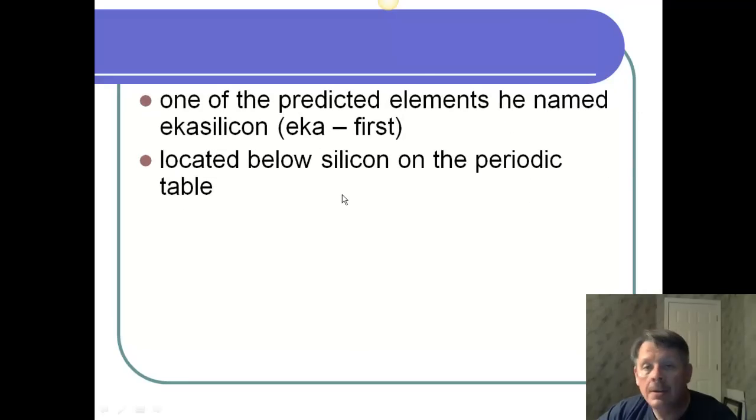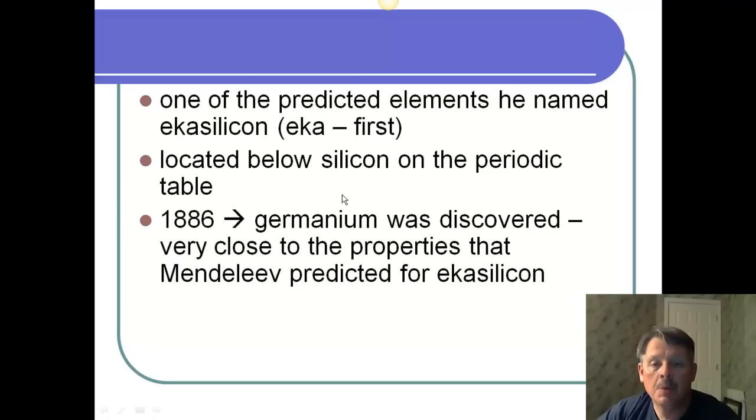Well, that element, he called eka, or first, silicon. And he put it below silicon on his periodic table. And it took another 20 years before germanium was discovered. And it had very close to the properties that Mendeleev had predicted for this eka silicon thing that he had said was there.